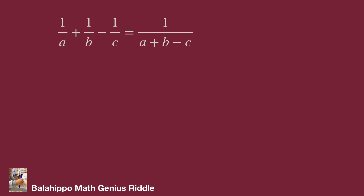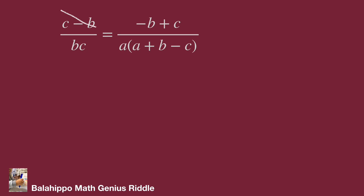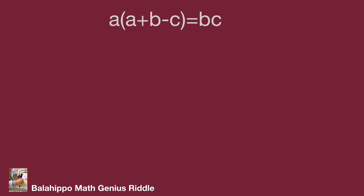Reducing the fractions on both sides, we get 1 over c equals 1 over (a plus b minus c), which leads to cross-multiplying: a multiplied by quantity (a plus b minus c) equals bc.